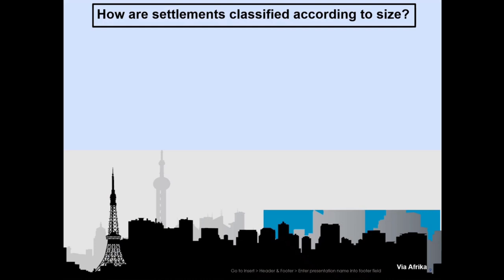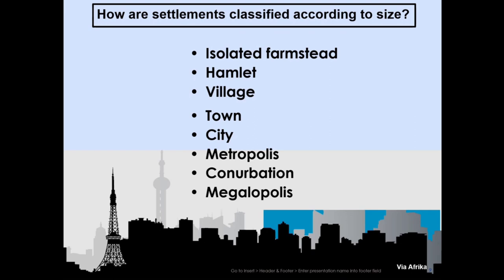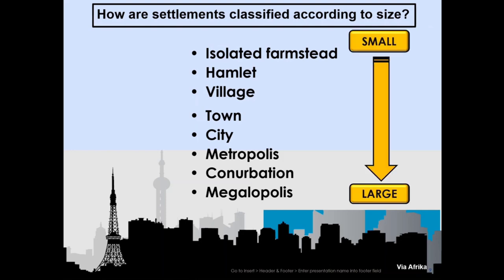Next we're going to look at how these settlements change in size. First of all, we start off with an isolated farmstead. If we go right back to settlement, where did the settlement start from? It started from a farm — irrespective of what type of farm it was — then it became a hamlet, then it became a village, and as the places become bigger, it changed its name and function. So where do I cut off? Where is a rural settlement and where is an urban settlement? Your farm, hamlet, and village functions are unifunctional — they will only function in one thing: agriculture, fishing, or mining.